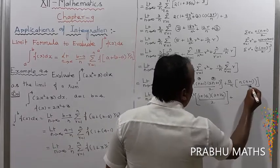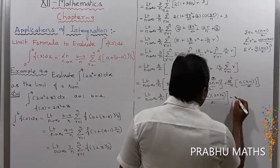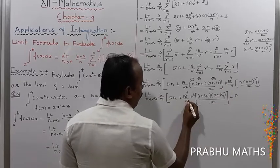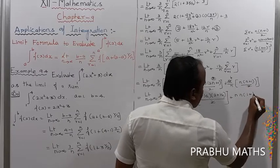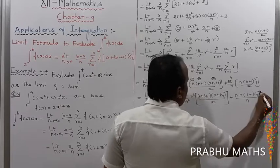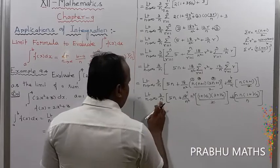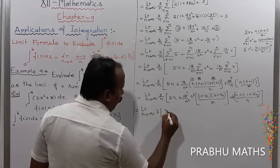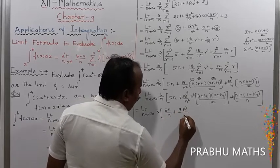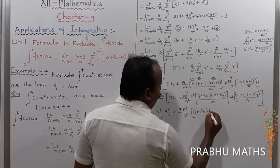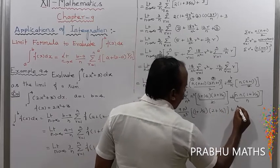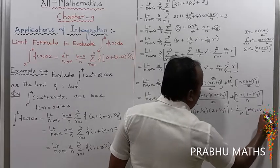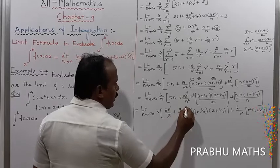Cancelling common factors: n cancels with n, n² cancels, n³ cancels with n³. This gives limit n tends to infinity of 3 into [5 + 9·(1 + 1/n)·(2 + 1/n) + 6·(1 + 1/n)].